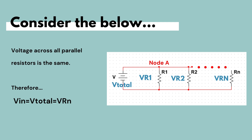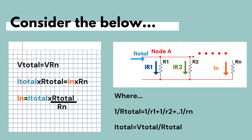We know and have verified that all voltages across parallel elements are the same. Therefore, the voltage across Rn is equivalent to the input voltage of the power supply, which is applied across the resistors in parallel, and is also equal to the voltage across the equivalent total parallel resistance. To find the current flowing through Rn, using this equivalence we can say that V_total equals V_Rn. Substituting Ohm's law, V_total becomes I_total times R_total, and V_Rn becomes I_n times R_n.